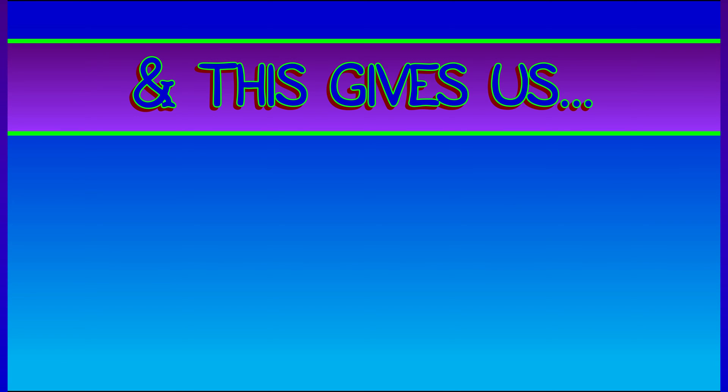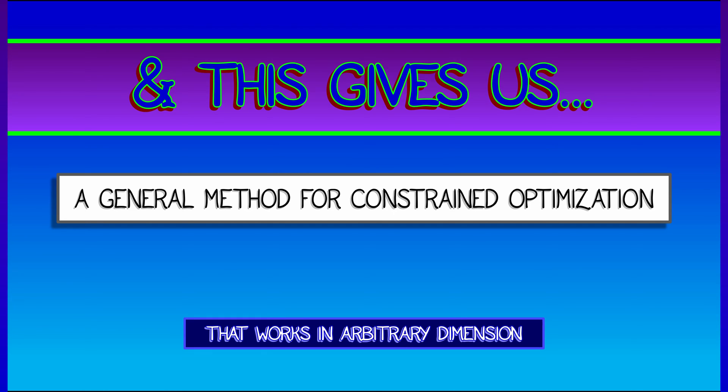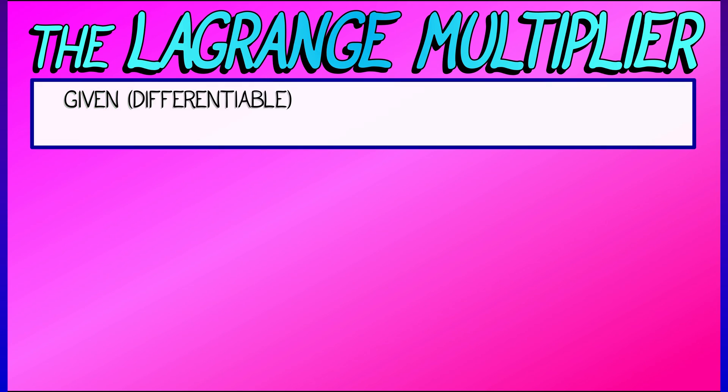What comes next is a general method for constrained optimization that works in arbitrary dimension. This is the method of Lagrange, using a Lagrange multiplier.